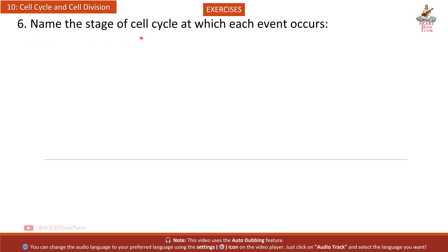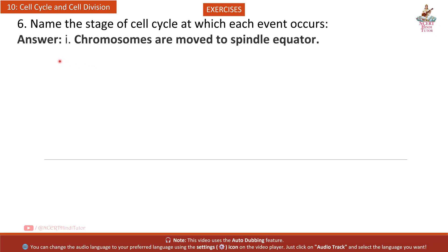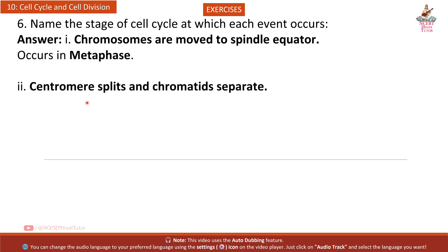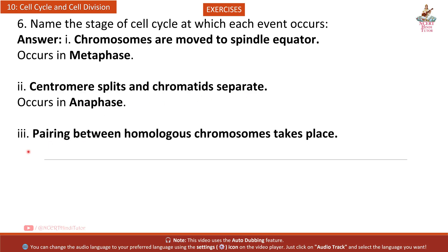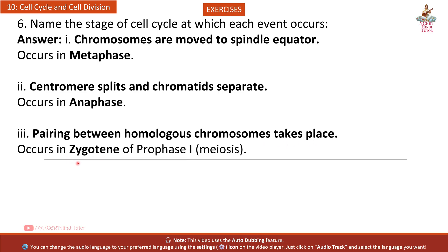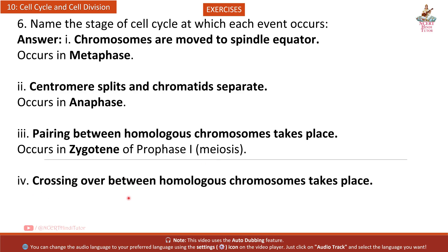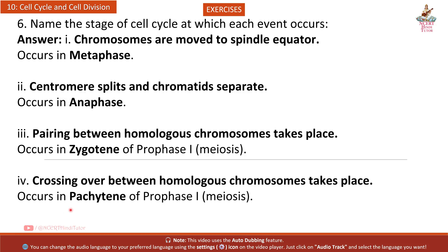Question 6: Name the stage of cell cycle at which each event occurs. 1. Chromosomes are moved to spindle equator — occurs in metaphase. 2. Centromere splits and chromatids separate — occurs in anaphase. 3. Pairing between homologous chromosomes takes place — occurs in zygotene of prophase 1 meiosis. 4. Crossing over between homologous chromosomes takes place — occurs in pachytene of prophase 1 meiosis.